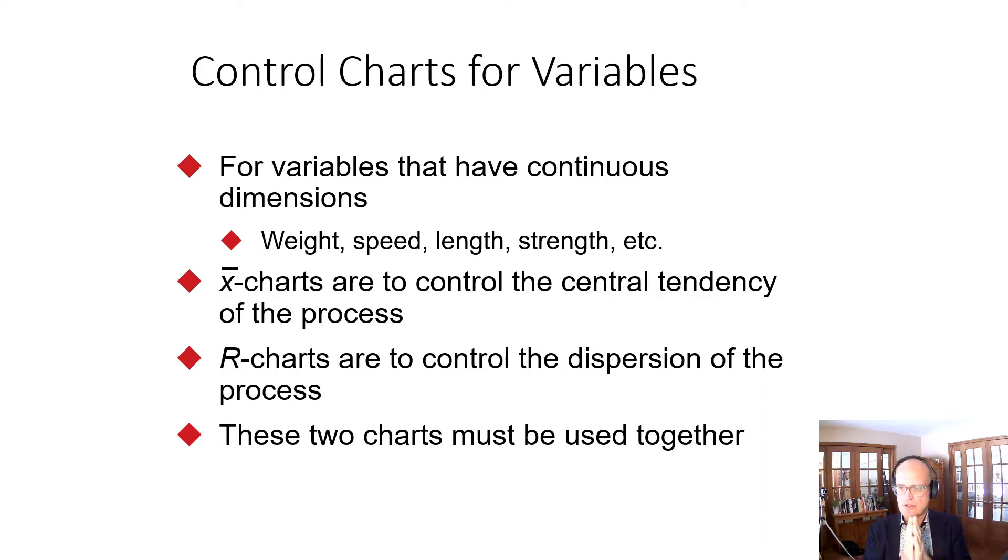The first decision you have to make is, do I have a variable or do I have an attribute? For students of operations management, this is probably the place they go wrong most frequently. Variables are continuous. X-bar charts are to control the central tendency of the process, and R charts are to control the dispersion of the process. They measure the variability.